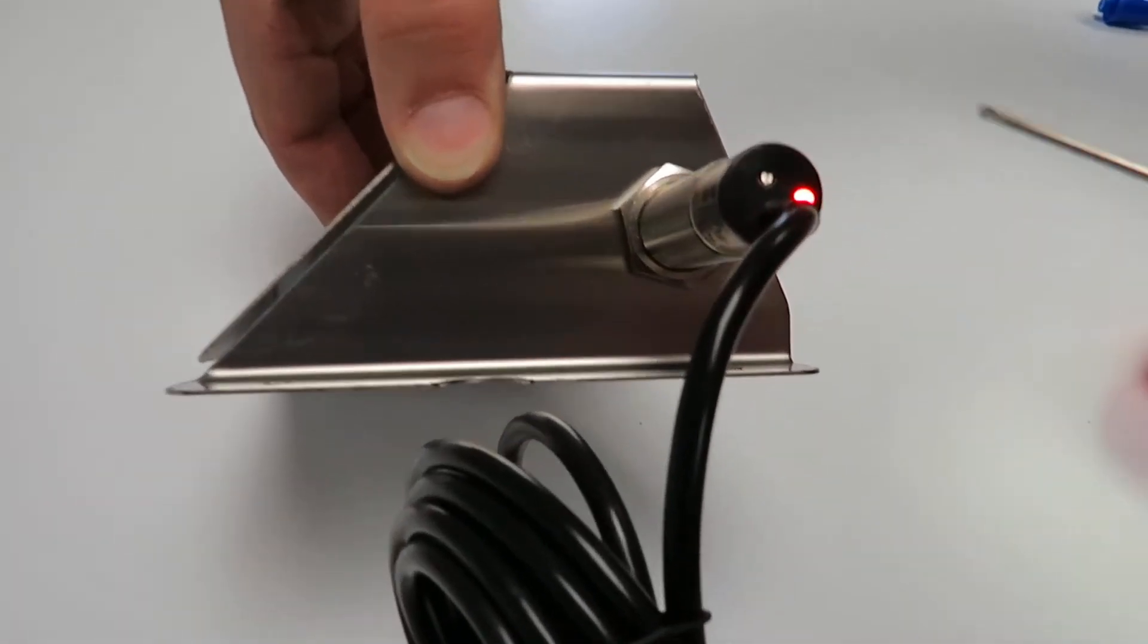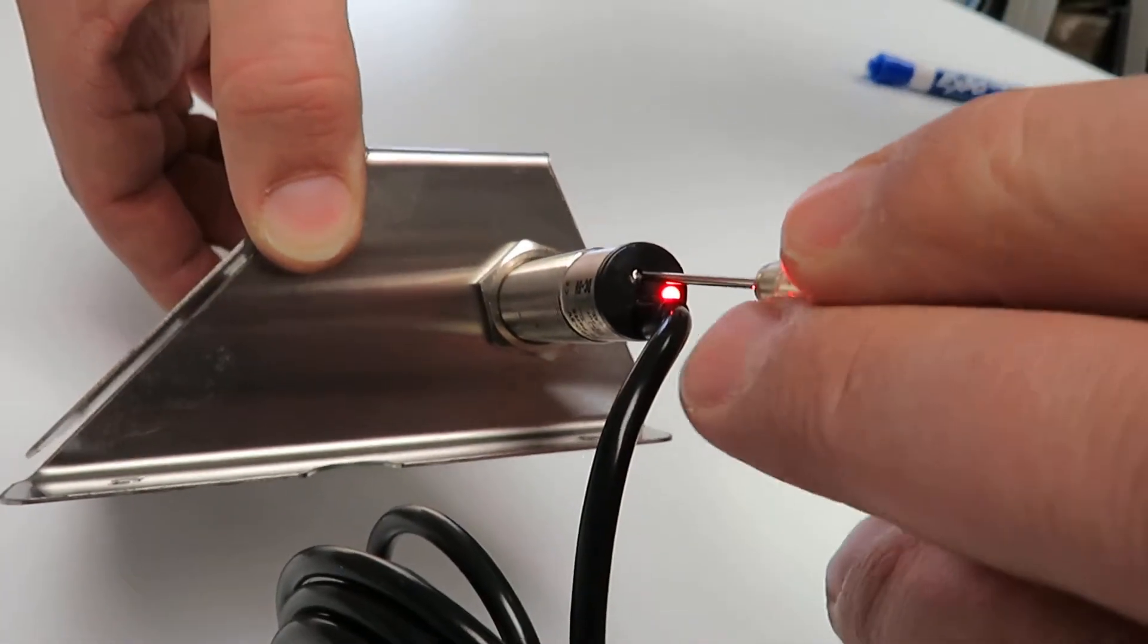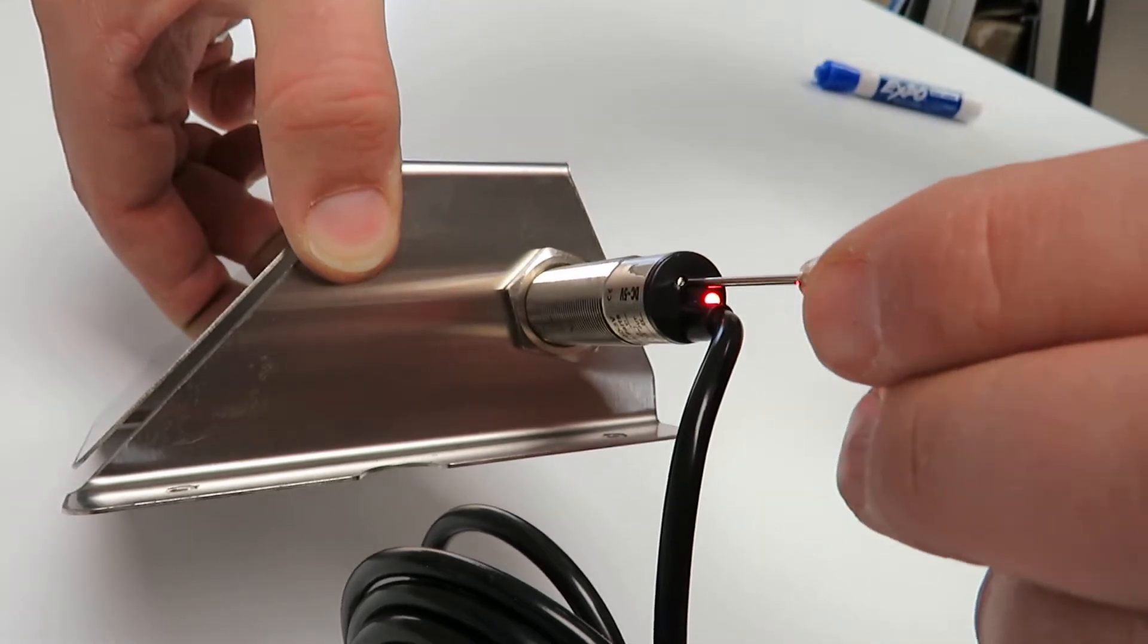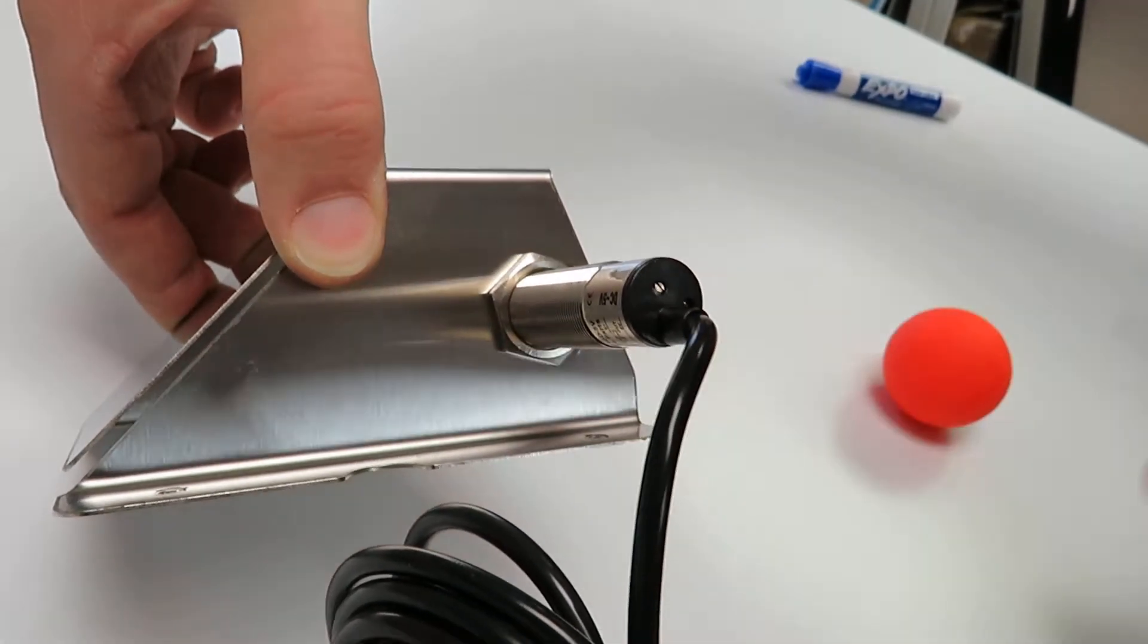Take your flat screwdriver and put it into this screw and turn counterclockwise until you see the light turn off. Turn very slowly.